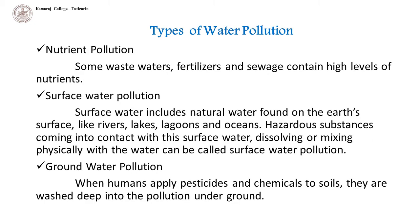There are many types of water pollution because water comes from many sources. Nutrient pollution: some wastewater, fertilizers and sewage contain high levels of nutrients. If they end up in water bodies, they encourage algae and weed growth in the water. This will make the water undrinkable and even clog filters. Too much algae will also use up all the oxygen in the water, and other organisms will die out of oxygen starvation.